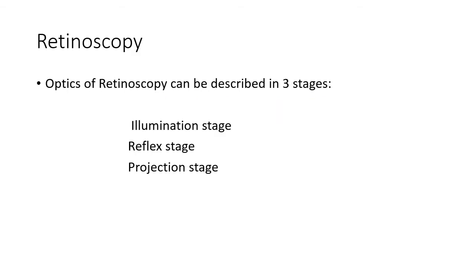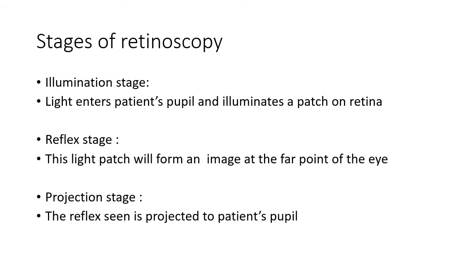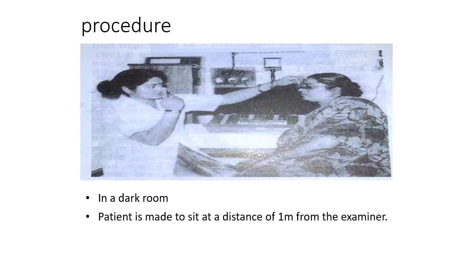The optics of retinoscopy can be described in three stages: the illumination stage, the reflex stage, and the projection stage. In the illumination stage, light enters the patient's pupil. In the reflex stage, the light patch forms an image at the far point of the eye and the reflex is projected to the patient's pupil. In today's world we are doing refraction with a refractometer, but the classical process involves a dark room.